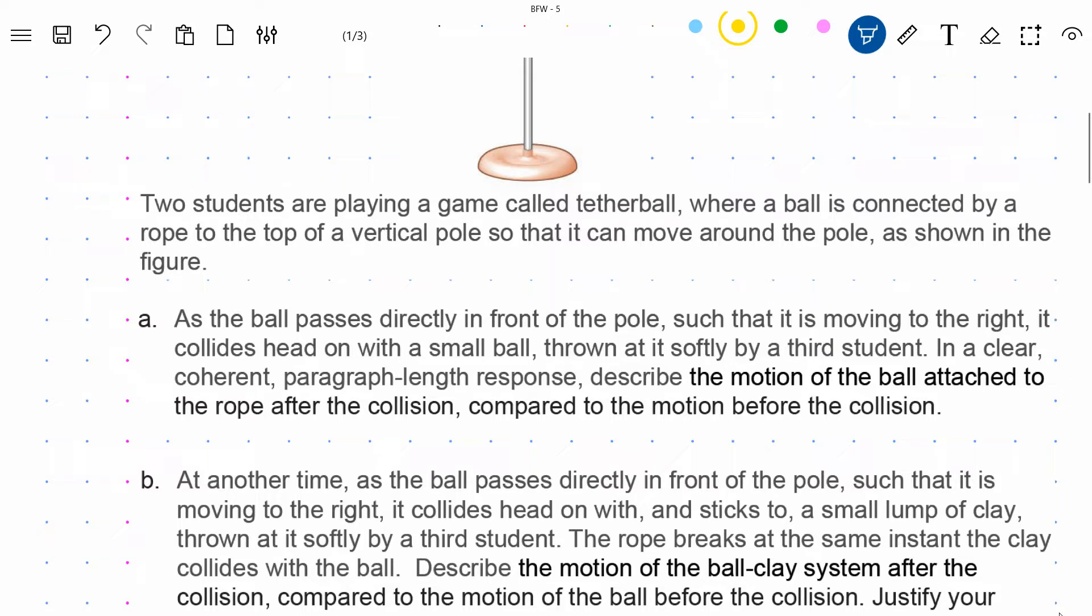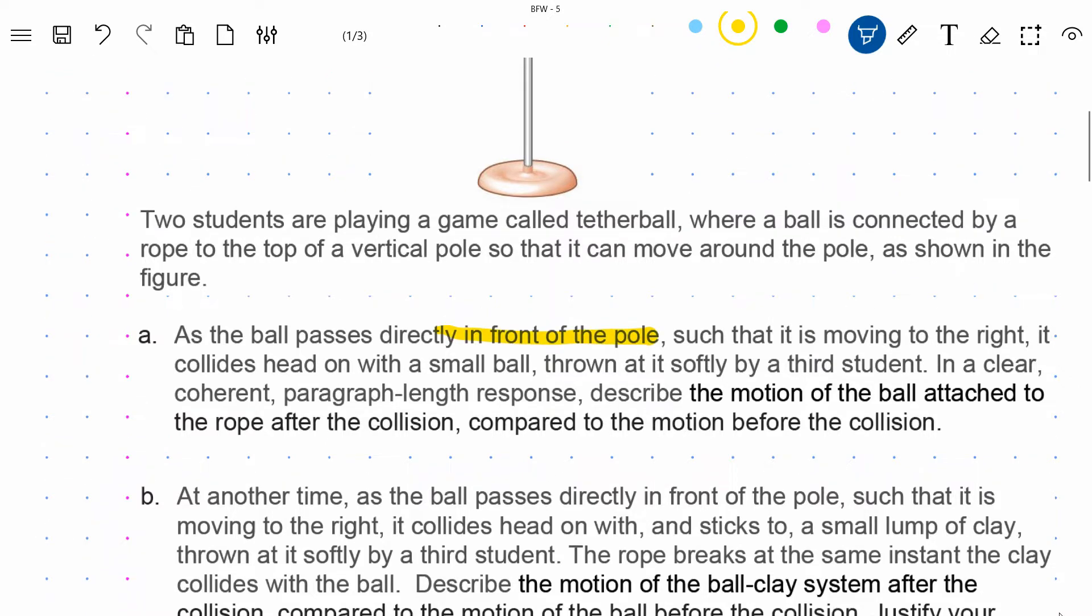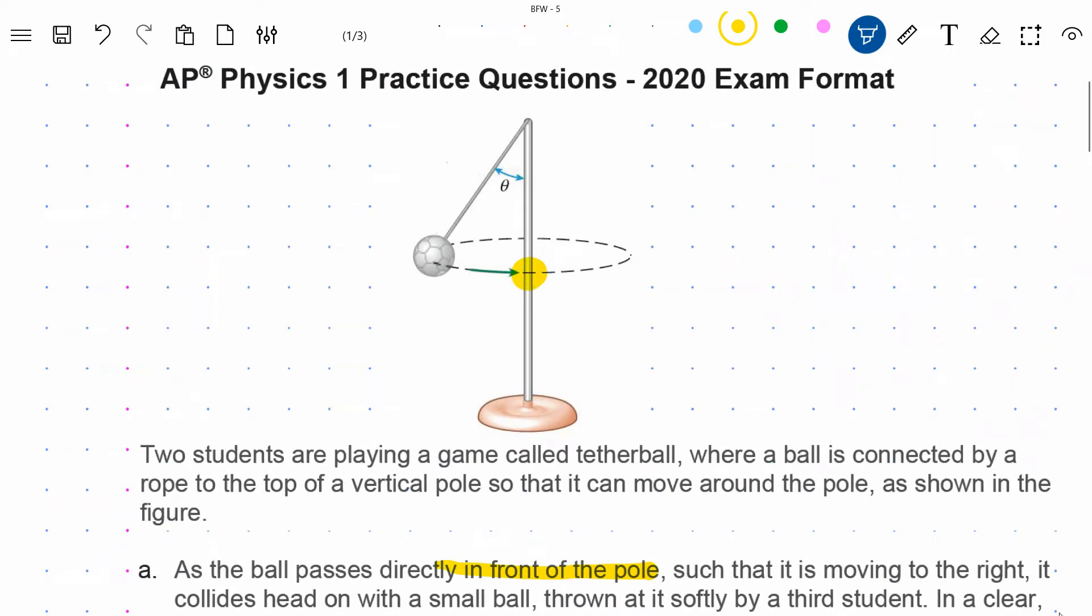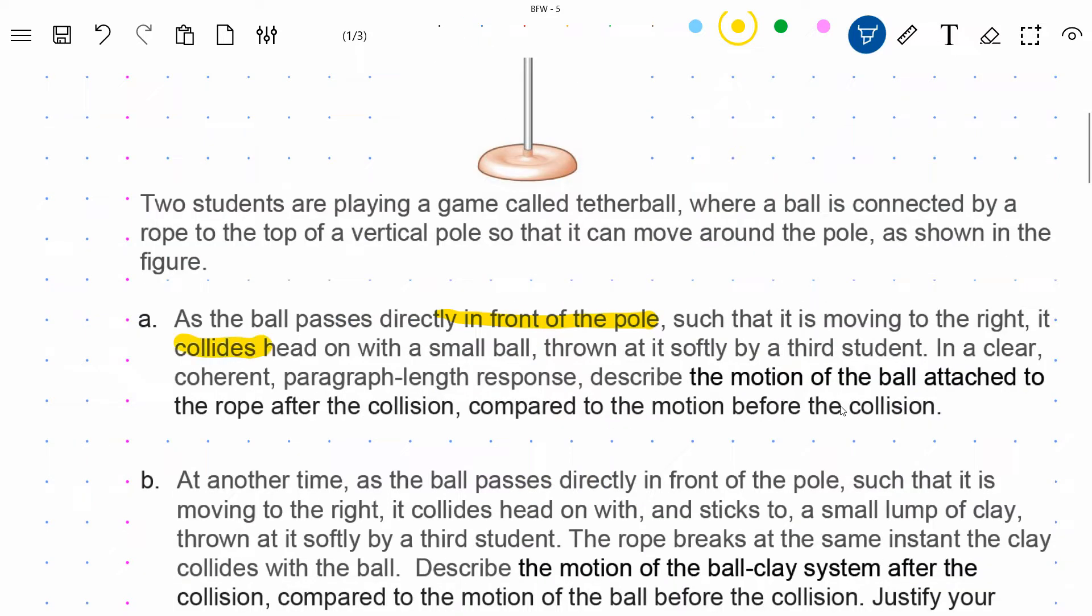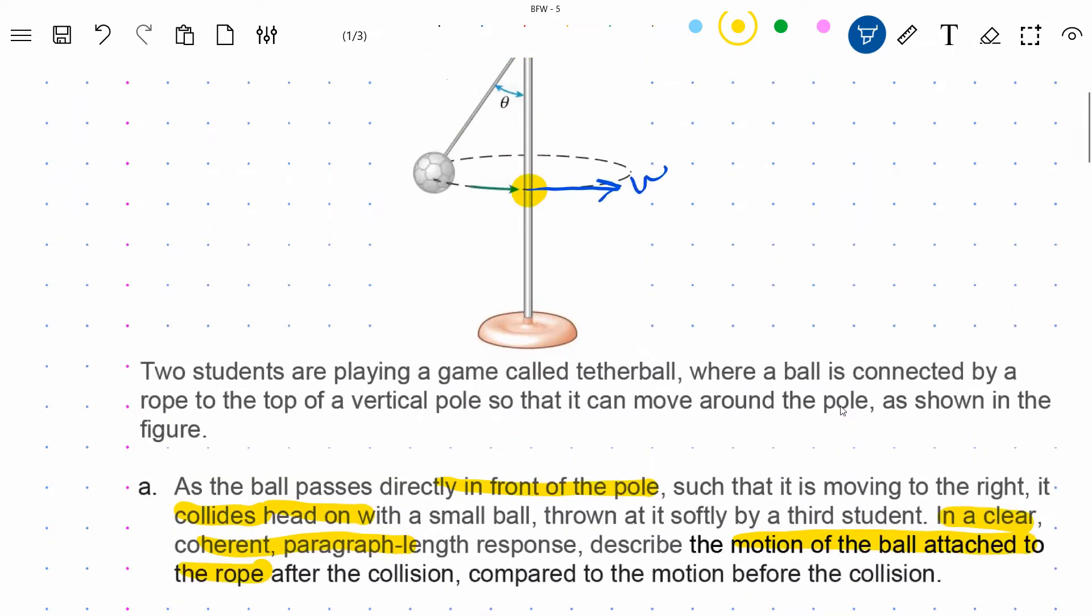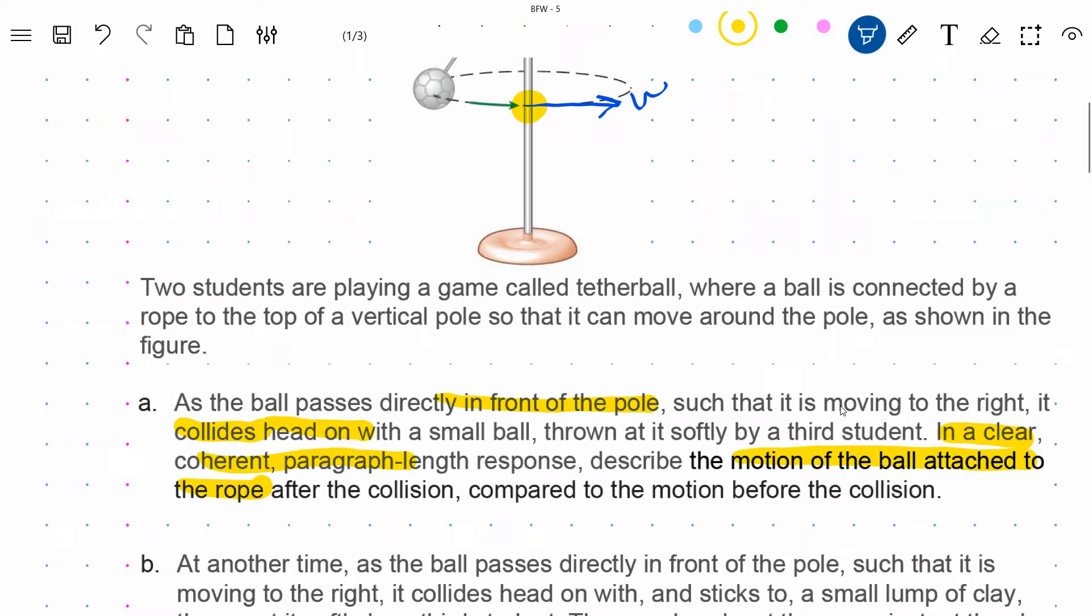Now part A specifies as the ball passes directly in front of the pole such that it's moving to the right, so it's moving to the right, like right here if you can imagine that, where its velocity at that very instant would be directed to our right viewing it from this point of view. It collides head on with a small ball thrown at it softly by a third student. And we're asked in a clear, coherent paragraph length response to describe the motion of the ball attached to the rope—I'm going to refer to that as the tetherball—after the collision compared to the motion before the collision. Now, being a free response question, you are well advised to describe as many details as you can here, bearing in mind that you must keep it relevant to the question and, of course, correct physics.